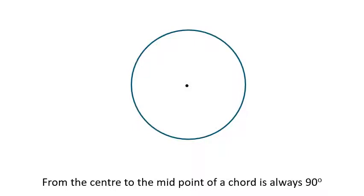The line that joins the midpoint of a chord to the center of a circle is always at right angles to the chord.